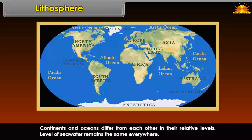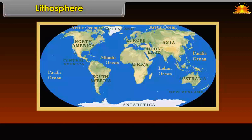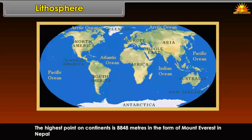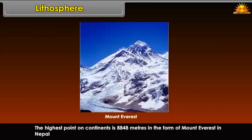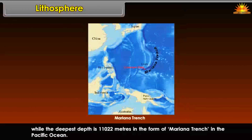The level of seawater remains the same everywhere and is called sea level. The continents have an average depth of 3,500 meters in oceans. The highest point on continents is 8,848 meters — Mount Everest in Nepal — while the deepest point is 11,022 meters — the Mariana Trench in the Pacific Ocean.